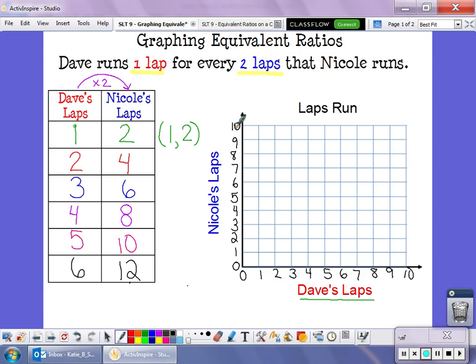Now remember, the first number in your ordered pair is your x value. The second number is your y value. The first number always tells us how far across the graph we're going. And the y value tells us how far up we go. So the x value here is one, which means I'm going to start at zero and go over one for Dave's laps. My y value for Nicole is two. So I'm going to go up two and put a dot. This dot here shows Dave had one lap. Nicole has two laps.